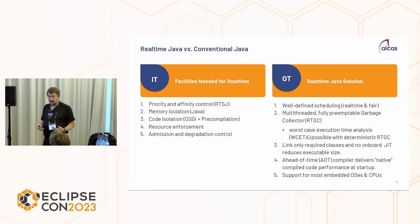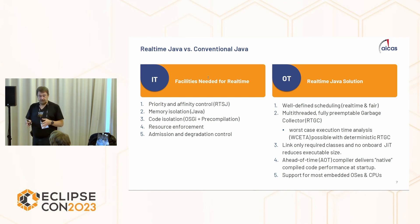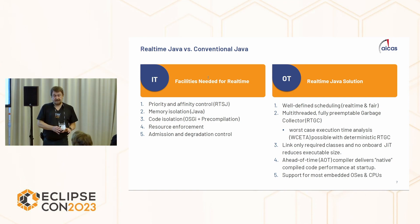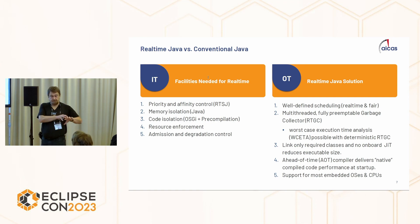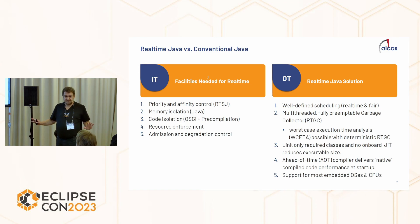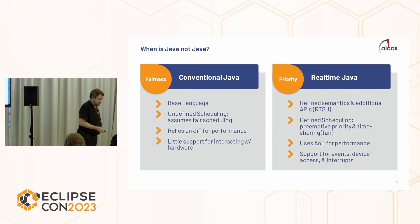We have ahead-of-time compilation so we can compile code before deploying it. For downloaded code, we also have a way to compile code in a jar file, provide an SO for it, and link that at runtime, so we can download code even if it wasn't in the initial image. We can put the base platform things in the initial image and run from there. And of course the operating systems supported are different — not everything is Linux or Windows; there are other operating systems used in these environments.